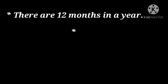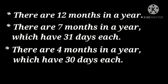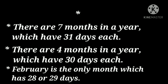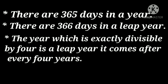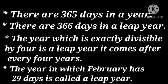There are 12 months in a year. There are 7 months in a year which have 31 days each, and 4 months which have 30 days each. February is the only month which has 28 or 29 days. There are 365 days in a year and 366 days in a leap year. The year exactly divisible by 4 is a leap year; it comes after every 4 years. The year in which February has 29 days is called a leap year.